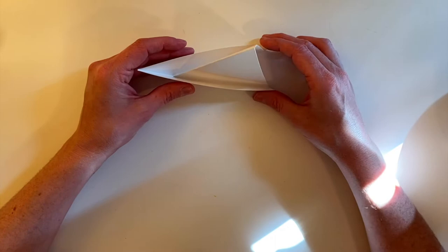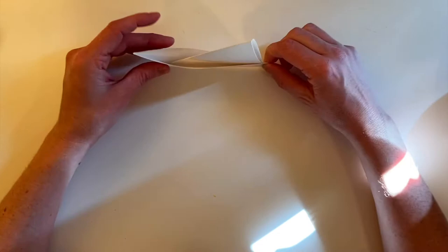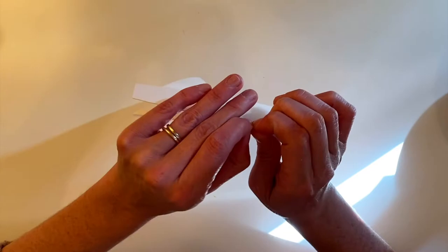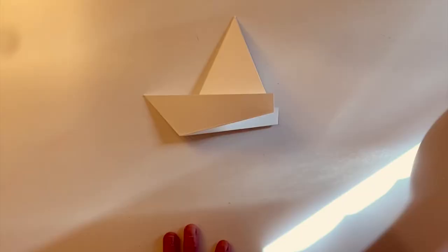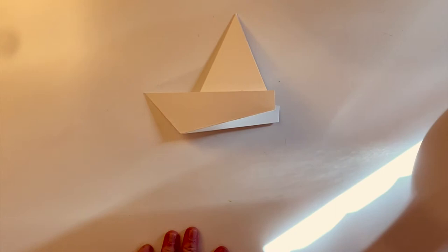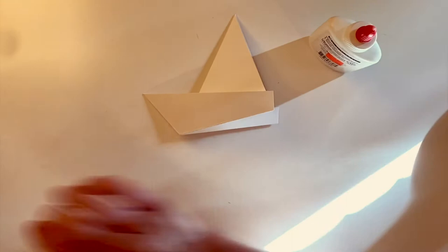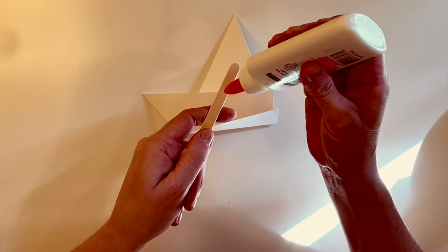But we're going to glue it right there so it stays closed, and we're going to attach a popsicle stick. Now take your liquid glue or glue stick and apply glue to about one inch at the top of your popsicle stick, on both sides.